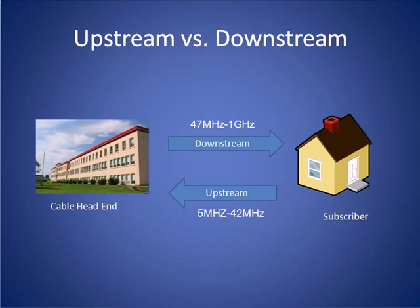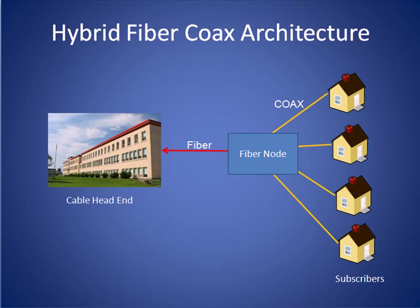Although two paths are shown, in reality a single coax connects the subscriber to a cable head end. Here we see a hybrid fiber coax architecture. Individual coaxes go from the subscriber to a fiber node, where they are converted to a fiber optic link for transmission to a cable head end.